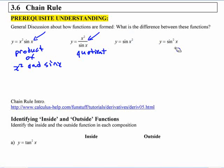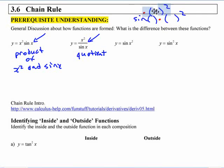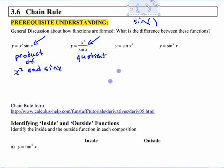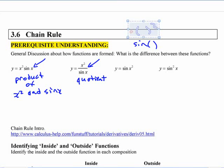These are not products. These involve the same two functions. They involve sine and something squared, but they're combined in a different way. The first one is the product of those two. The second one is the quotient of that. The last ones are not quotients or products. What are they?